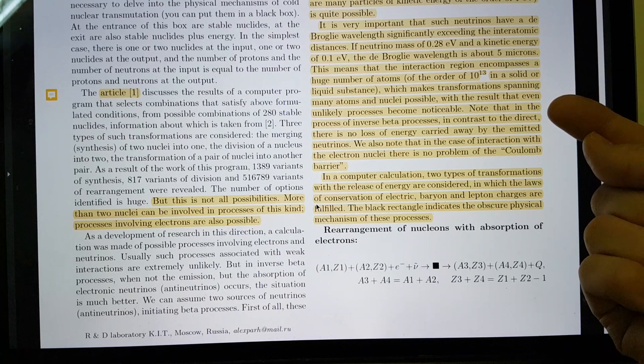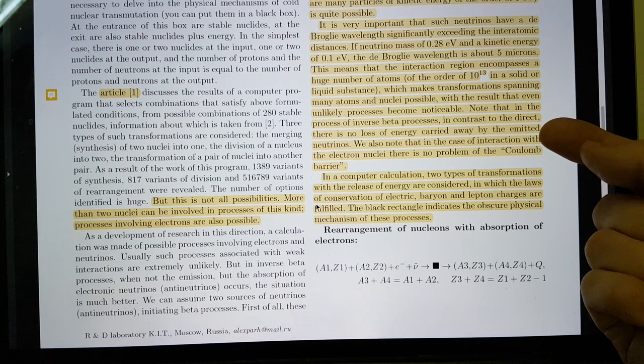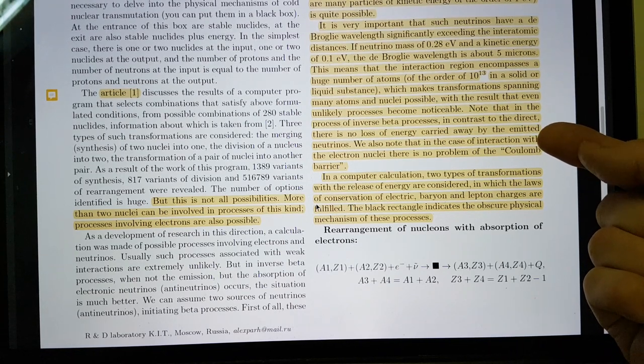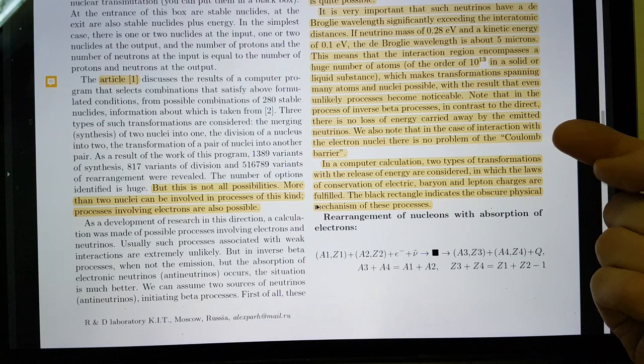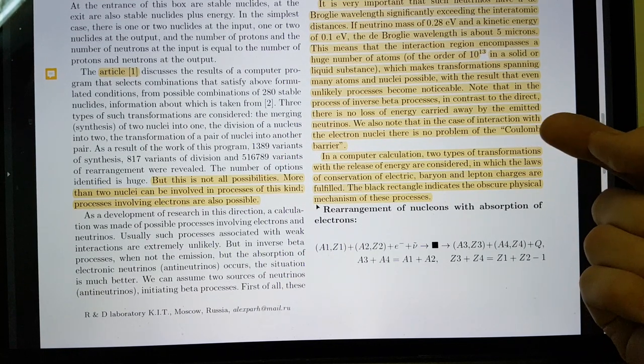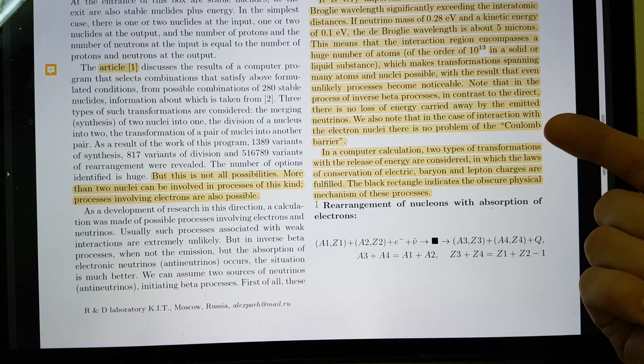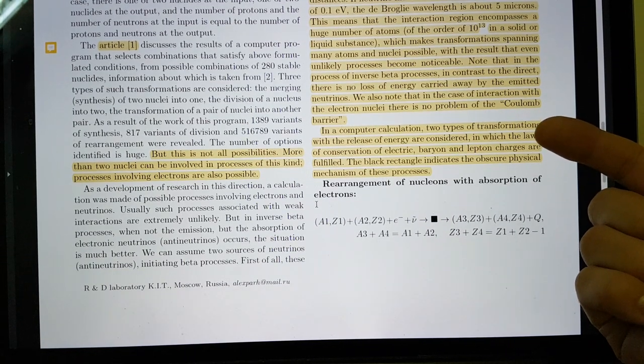Note that in the process of inverse beta processes, in contrast to the direct, there is no loss of energy carried away by the emitted neutrinos. We also note that in the case of interaction with the electron nuclei, there is no problem of Coulomb barrier.